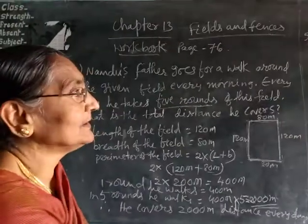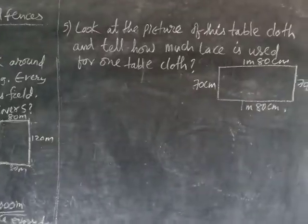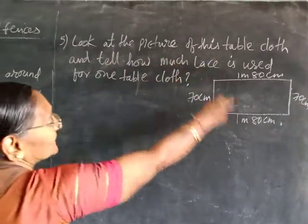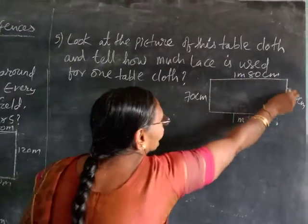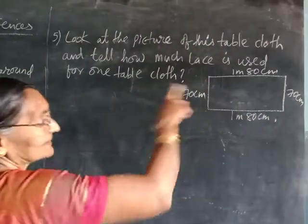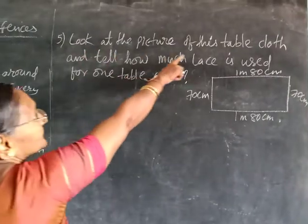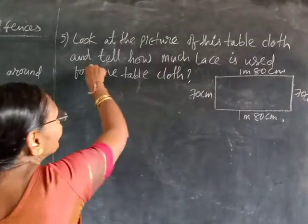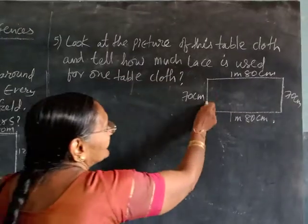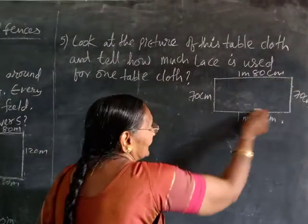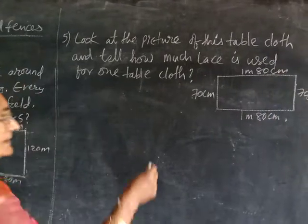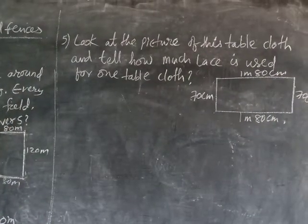Next, come to question number 5. See that — there is question number 5. Look at the picture of this tablecloth given. This is also looking like a rectangular shape. Look at the picture of this tablecloth and tell how much lace is used for one tablecloth. The total length of the tablecloth — that is the perimeter you have to find.